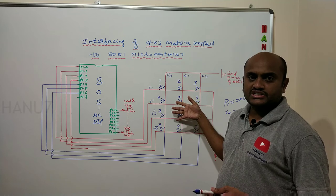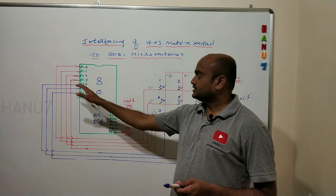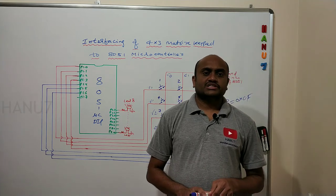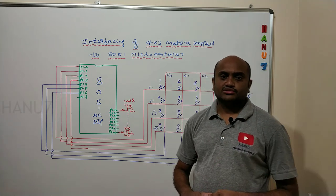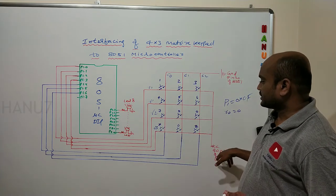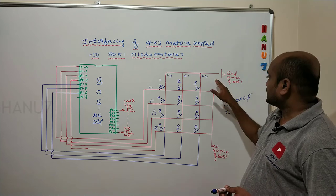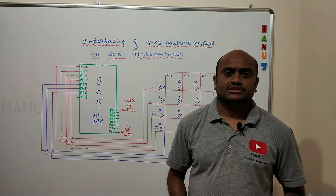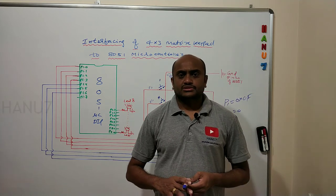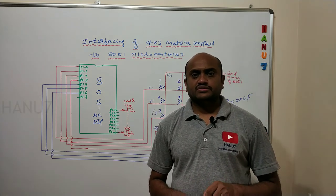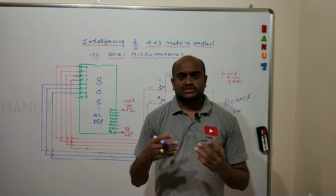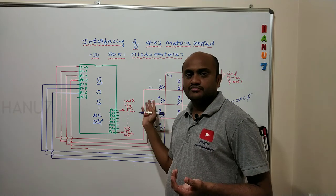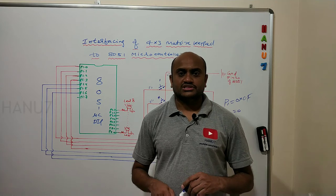Seven terminals of the 4x3 matrix keypad are connected to the 7 pins of Port P1. You have to make sure that these rows are connected to VCC and columns are connected to ground, or vice versa. You can choose any logic while designing the circuit. That is about the 4x3 matrix keypad interface to 8051. In the simulation part, we will see how to get output by programming key press. Thank you for watching.